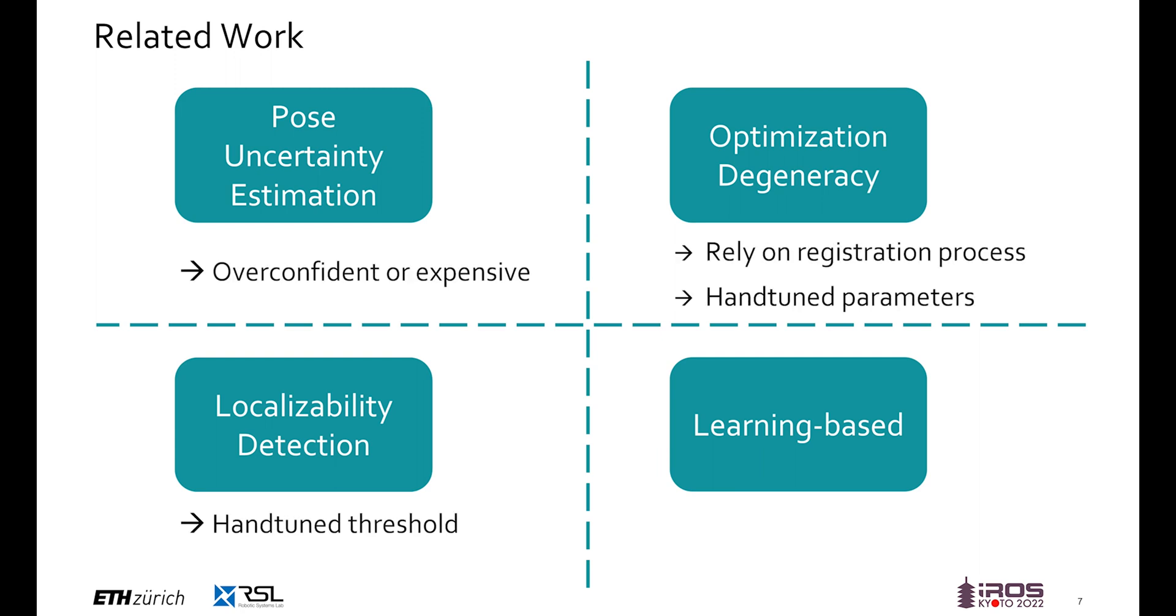However, all of the classical approaches either are computationally expensive, rely on the registration process, or have hand-tuned thresholds in their formulation. While the learning-based approaches are free of thresholding, they still either rely on careful feature extraction or only address 2D robot navigation in simpler environments.